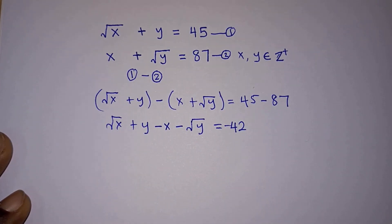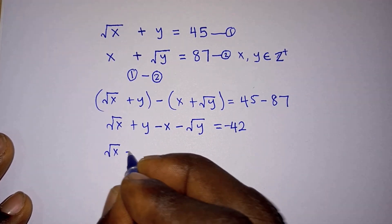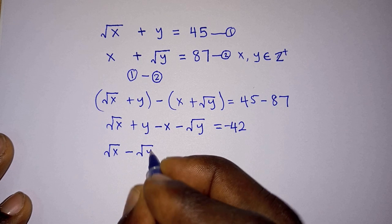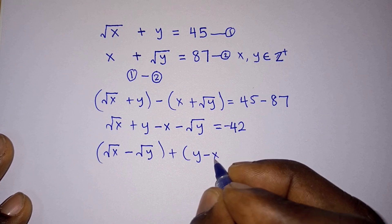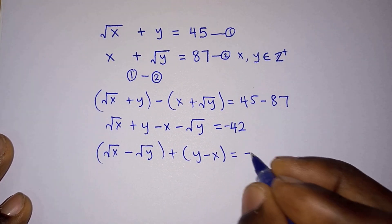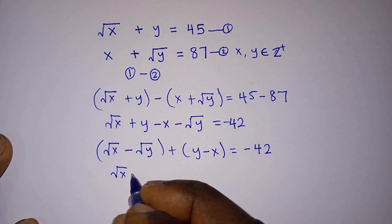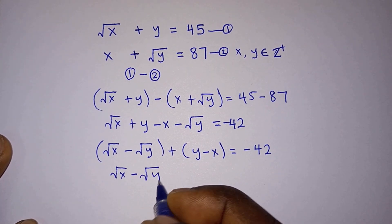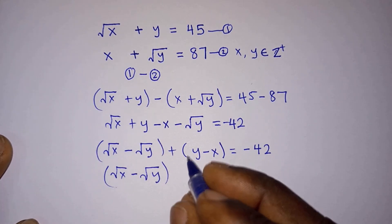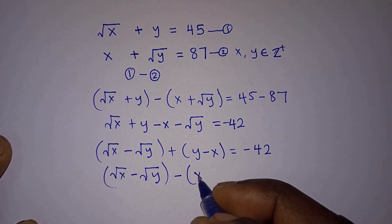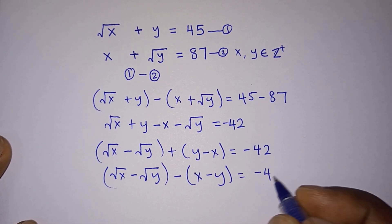Now let's group the terms with square roots and those without. We have square root of x minus square root of y, plus y minus x, equal to negative 42. From the y minus x part, we factor out negative one, giving us square root of x minus square root of y, minus (x minus y), equal to negative 42.